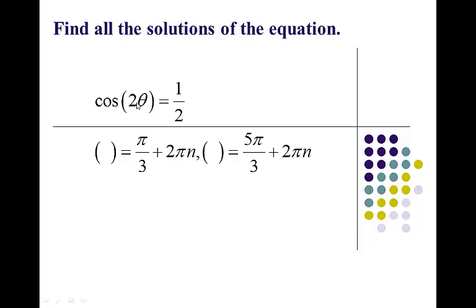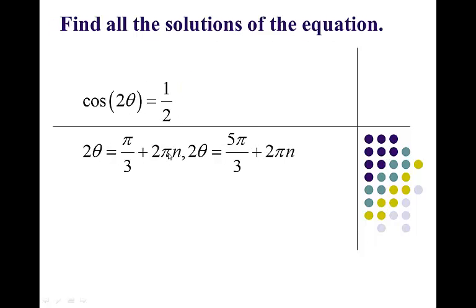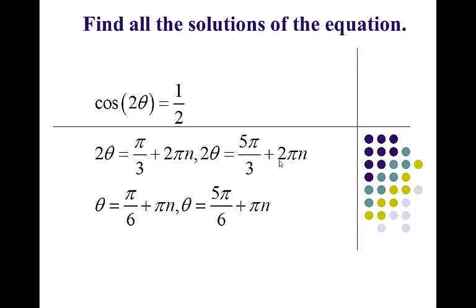Don't let the 2 theta influence this first move. Now stick 2 theta equal to pi over 3 plus 2 pi n, and 2 theta equals 5 pi over 3 plus 2 pi n. Now we're just an algebra 1 move away — just divide both sides by 2. So I get theta equals pi over 6 plus pi n and 5 pi over 6 plus pi n. These are the values of the angle.